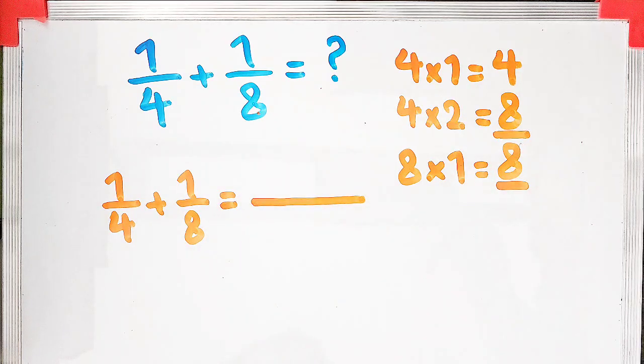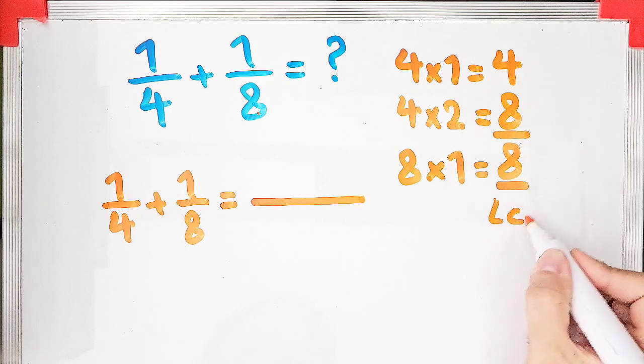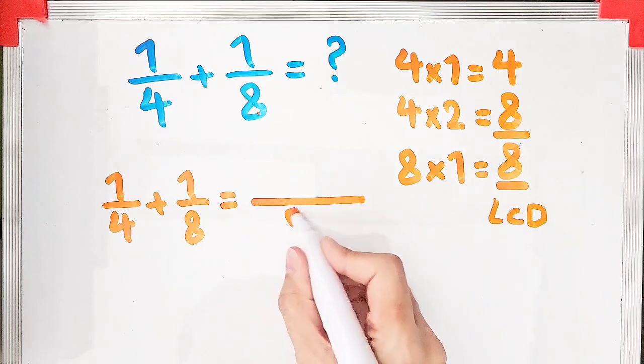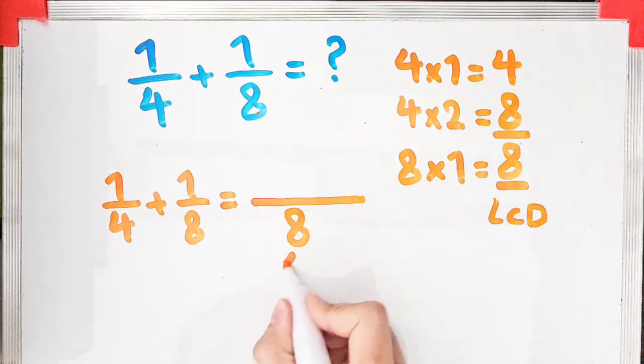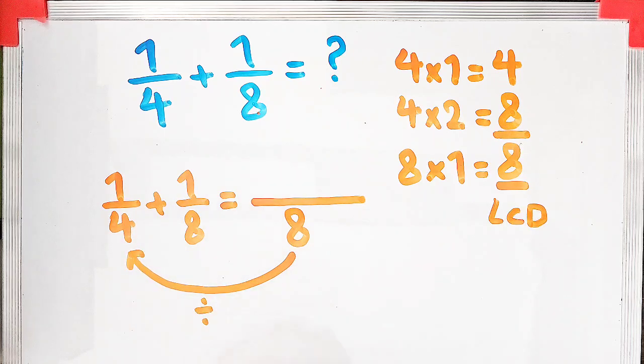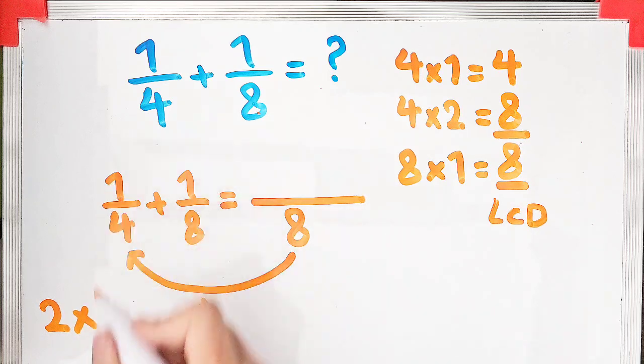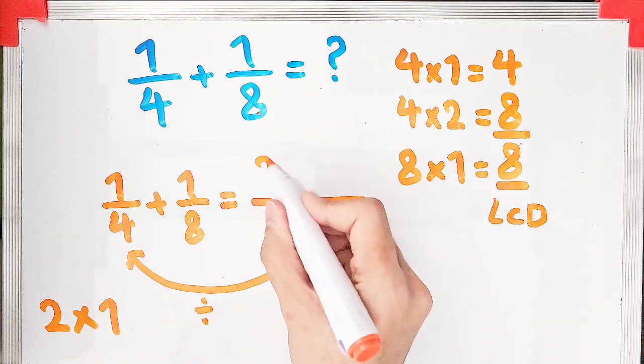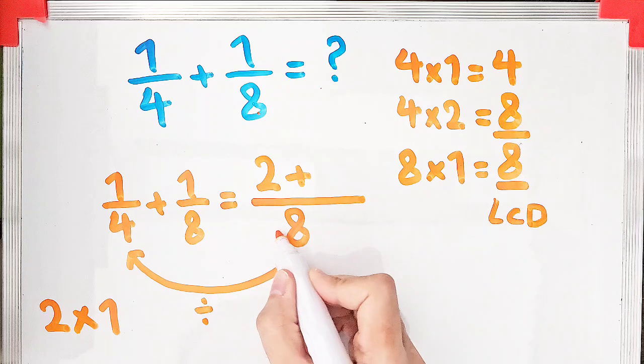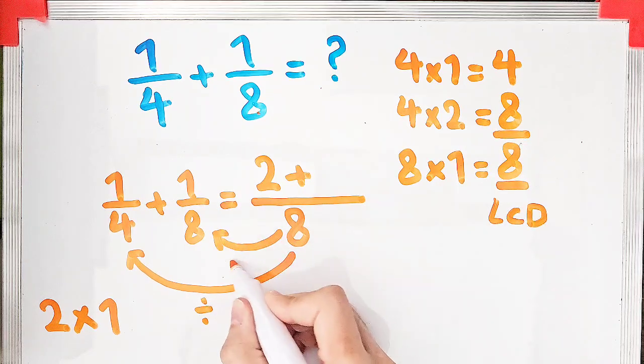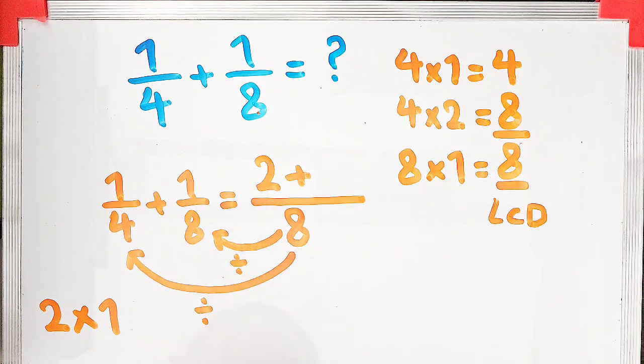We have a new fraction. The denominator of this fraction is eight. Eight divided by four equals two, and two times one equals two. In the numerator we write two. Plus, now eight divided by the denominator of the second fraction...